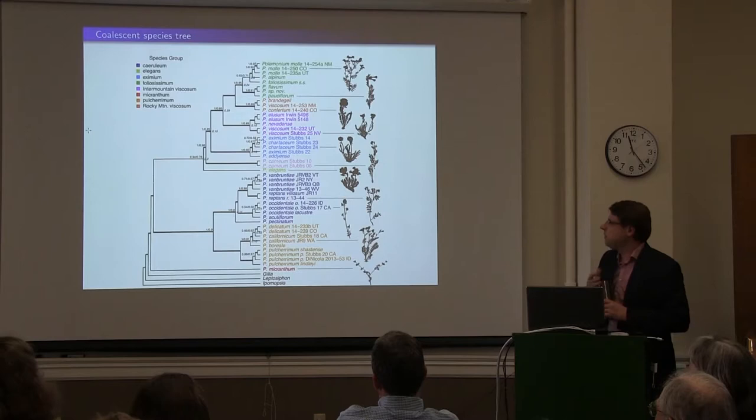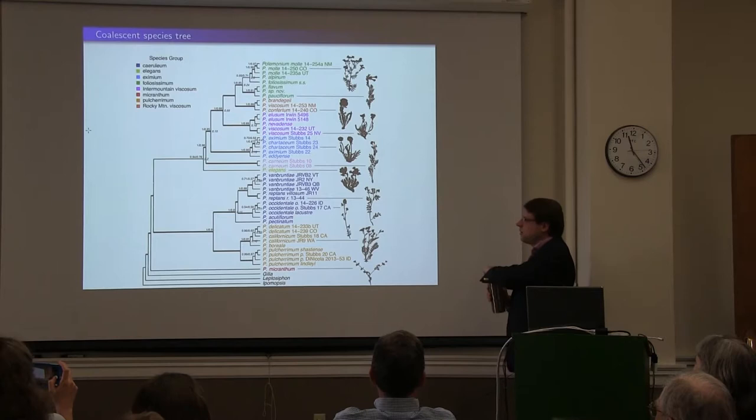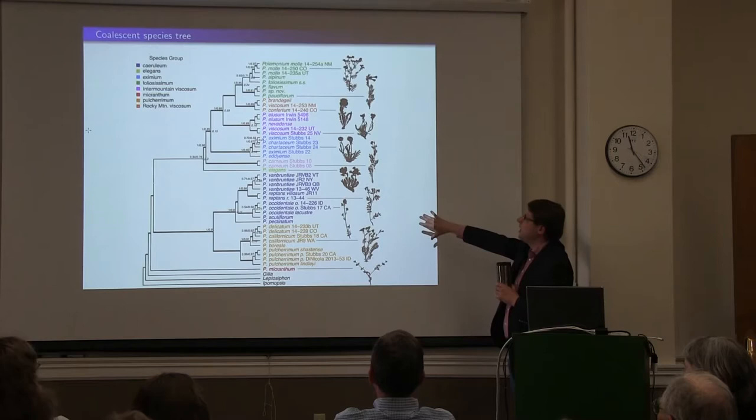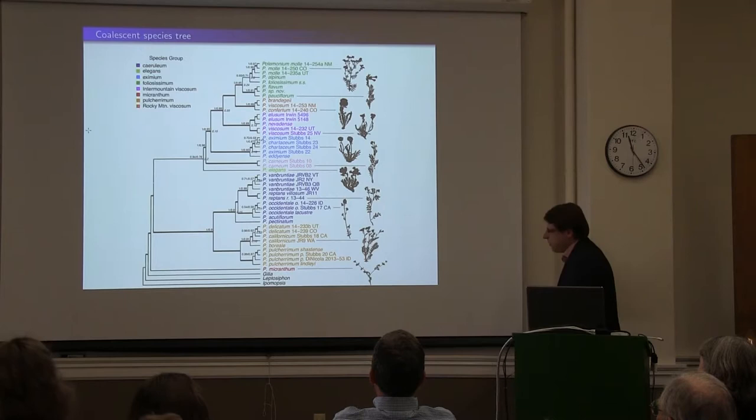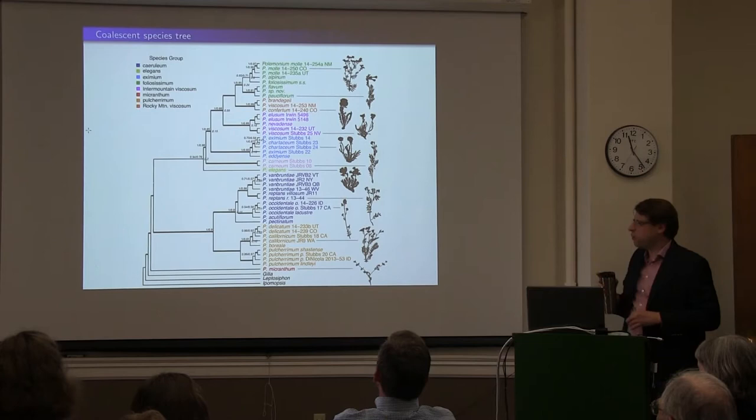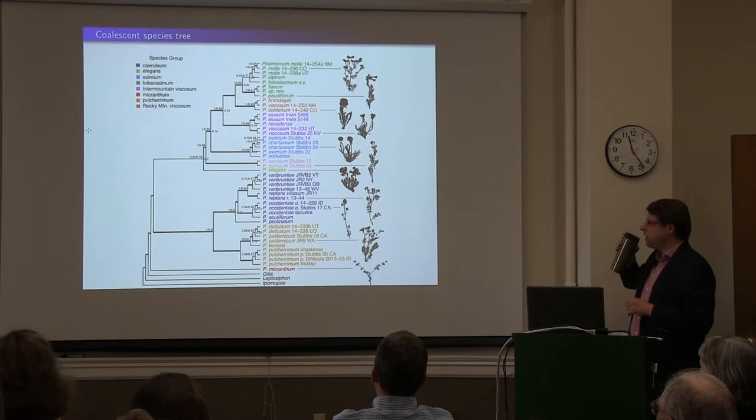This is a tree accounting only for incomplete lineage sorting. One limitation is that trees of this size can't currently explicitly test for reticulate evolution computationally. But these are all colored by clade, and essentially what we get — except for some cases — is a well-resolved, well-supported phylogeny of Polemonium based on 316 nuclear loci. However, there is a lot of discordance between these loci.